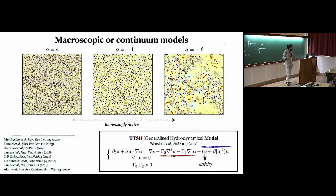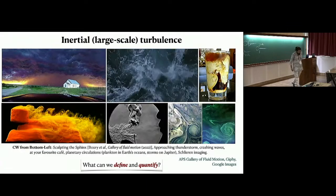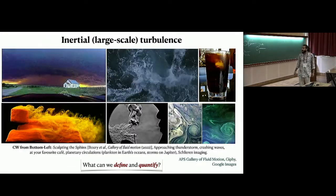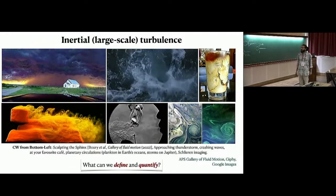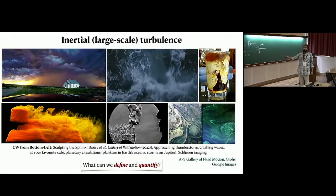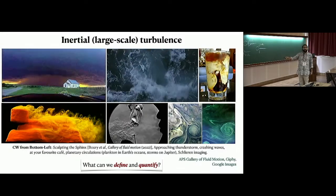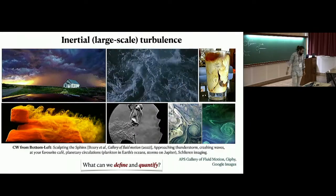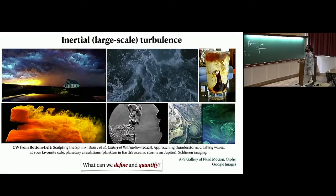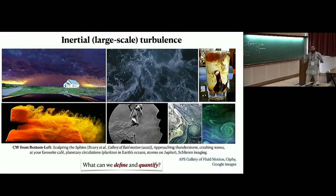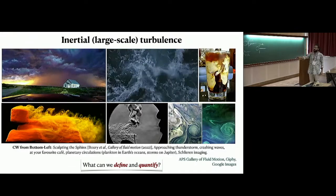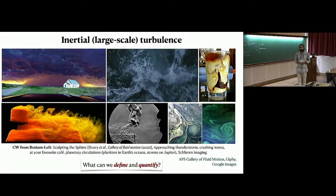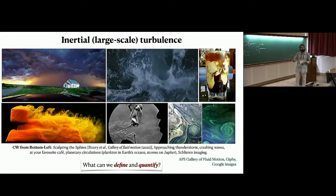Now I've used the word 'turbulence' a few times, so we really need to define what we mean. We've all encountered turbulence in many settings — thundercloud formation, crashing waves, mixing of plankton in oceans, a storm on Jupiter. The length scales are very different but the patterns are not. A Schlieren image of blowing out a candle shows very vigorous convection. But just visual similarity is not enough — we really need some quantitative measures.